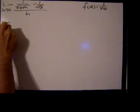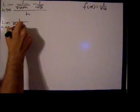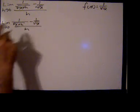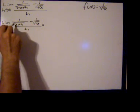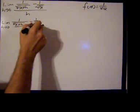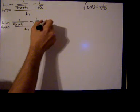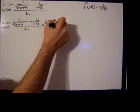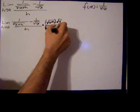We have the limit as h goes to 0 of 1 over the square root of x plus h, minus 1 over the square root of x, all over h. I want to get rid of this compound fraction, so I'm going to multiply the numerator and denominator by the common denominator of the top — that will be the square root of x plus h times the square root of x, over the square root of x plus h times the square root of x.